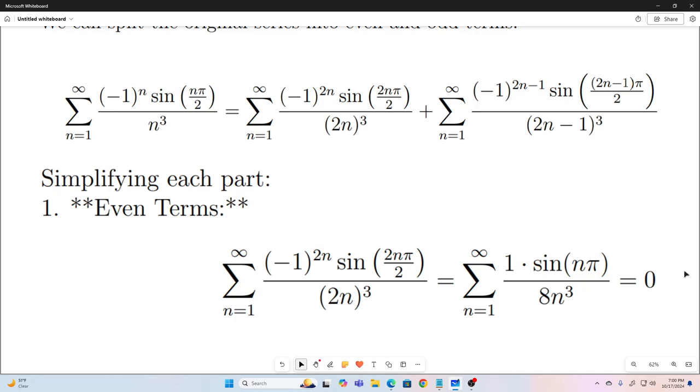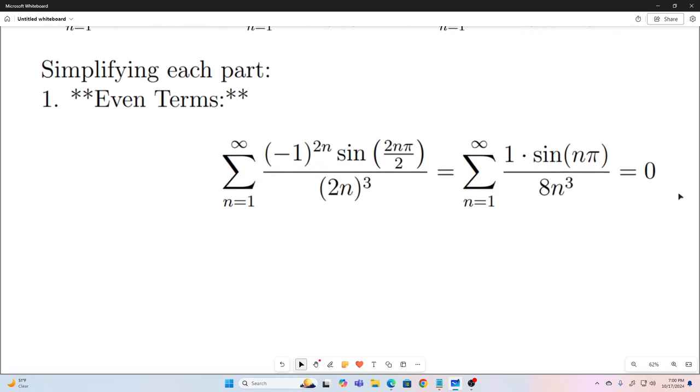So, let's simplify each part of that. We're going to be simplifying this, and we're going to be simplifying this. Well, this is just going to go to 0. For all integers n, we're just going to have sine of n pi. Sine of 0 is 0. Sine of pi is 0. Sine of 2 pi is 0. And so on. So, every single one of these things is going to be 0. So, that term is just going to cancel out. But what about our odd terms?